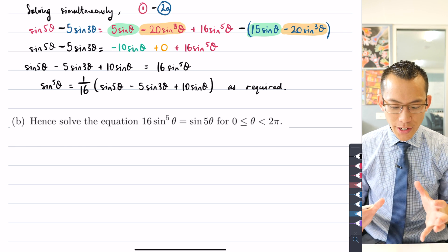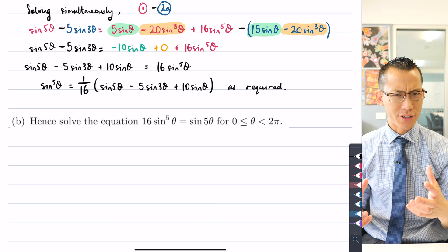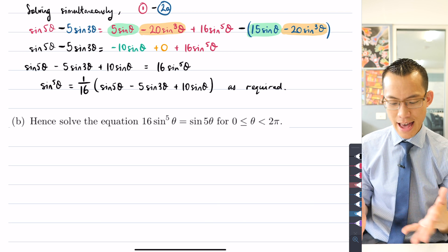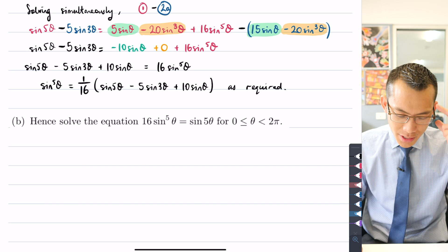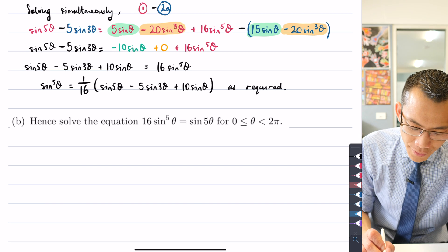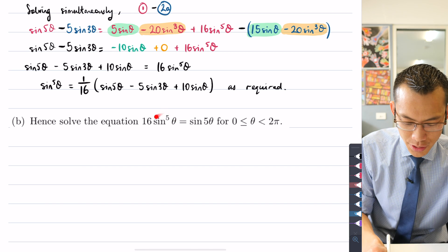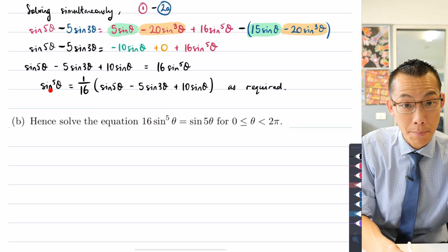Okay, so now we're going back into trigonometric equation solution land. But how do we do this? Well, you can see here that I have a result for sin 5θ right here from part A.